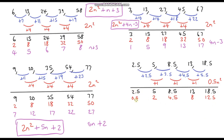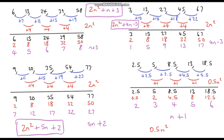2.5 subtract 0.5 is 2. 5 subtract 2 is 3. 8.5 subtract 4.5 is 4. And you can see the pattern — this is just going to go 5 and then 6. We've got an arithmetic sequence and this sequence has the nth term n plus 1 — it's the same as the 1 times table but shifted up by 1. So the nth term of my original sequence is 0.5n squared plus n plus 1.